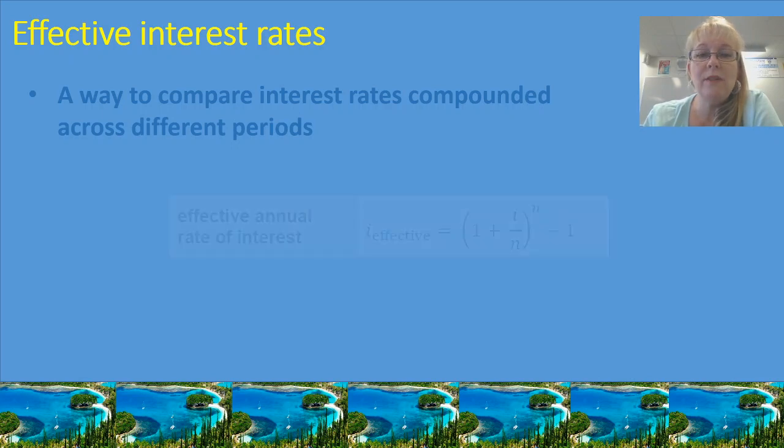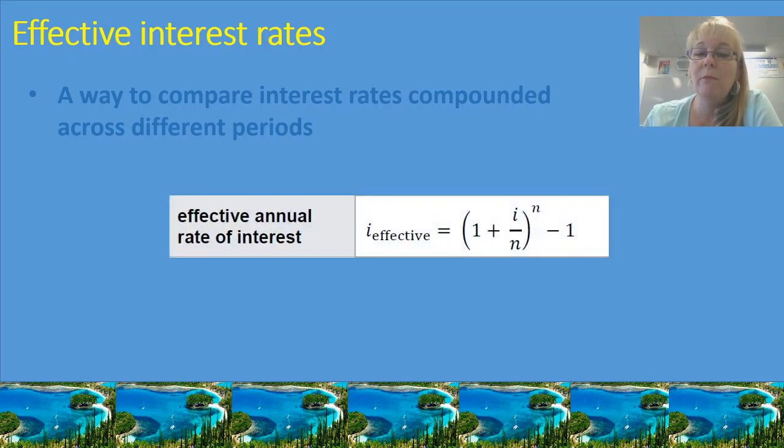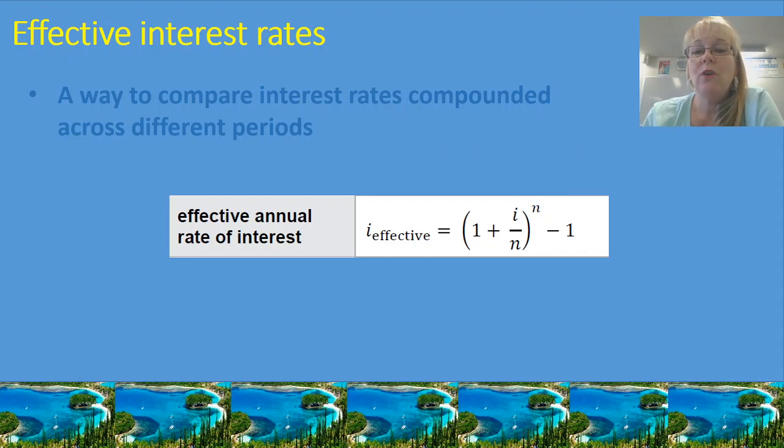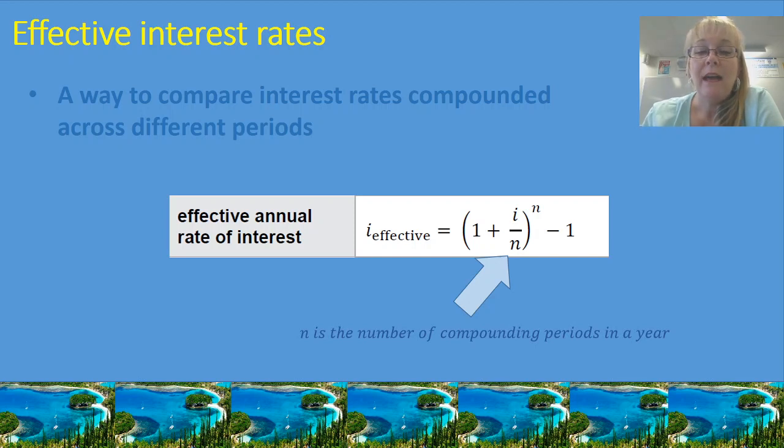Now the QCAA provides you with this beautiful formula on their formula sheet. It's the formula for an effective annual rate of interest, and this is what we use to make comparisons across different types of loans and investments. I'm going to show you now how to unpack this particular formula. So you can see in that formula you've got the little letter i. That is our nominal rate as a decimal, which means that if it's 3% per annum, you need to convert that to a decimal, that would be 0.03.